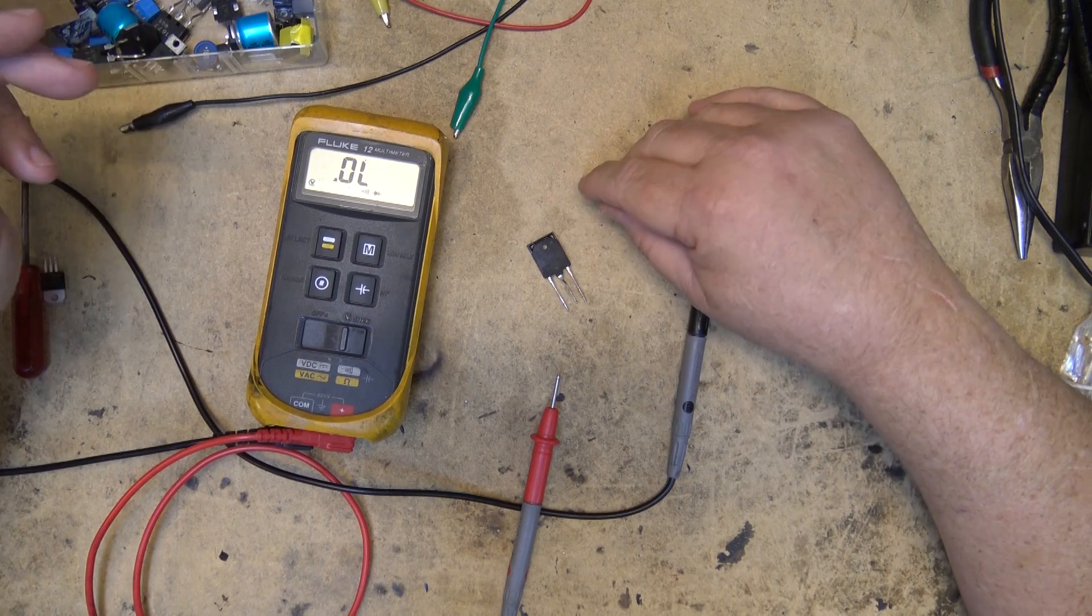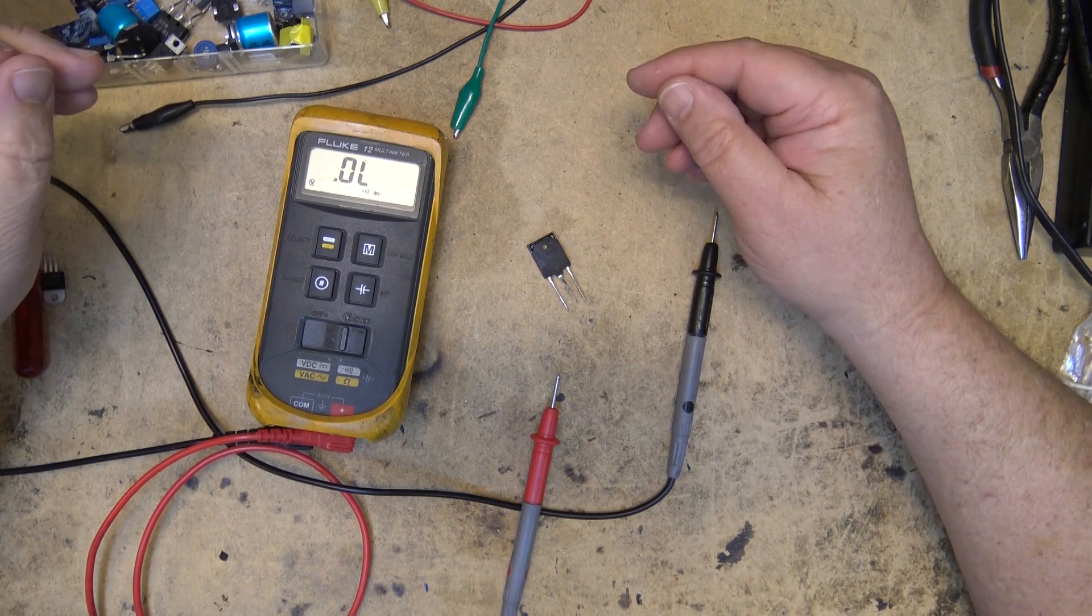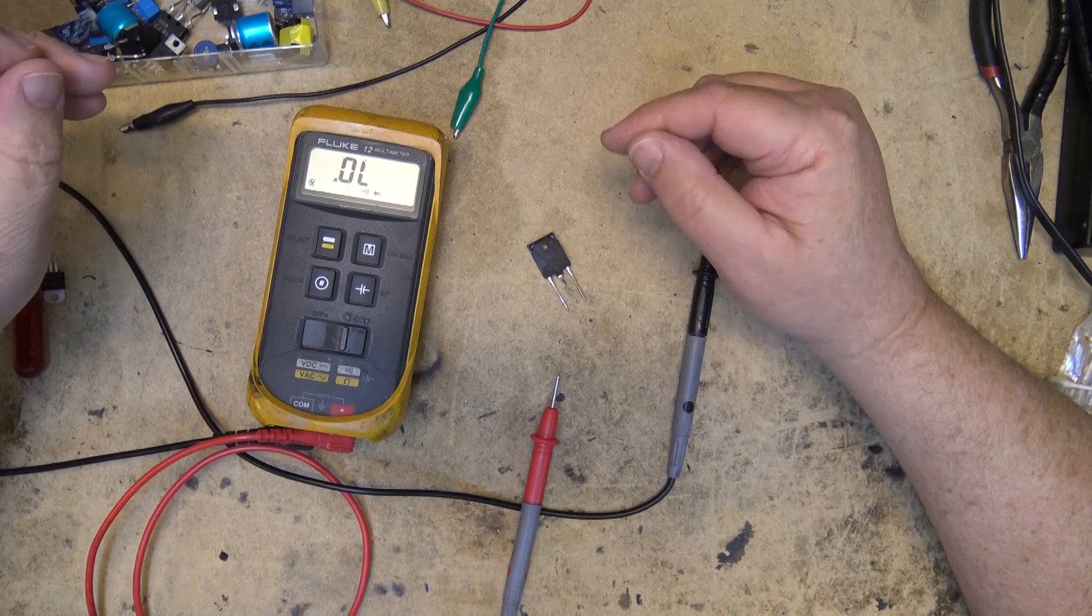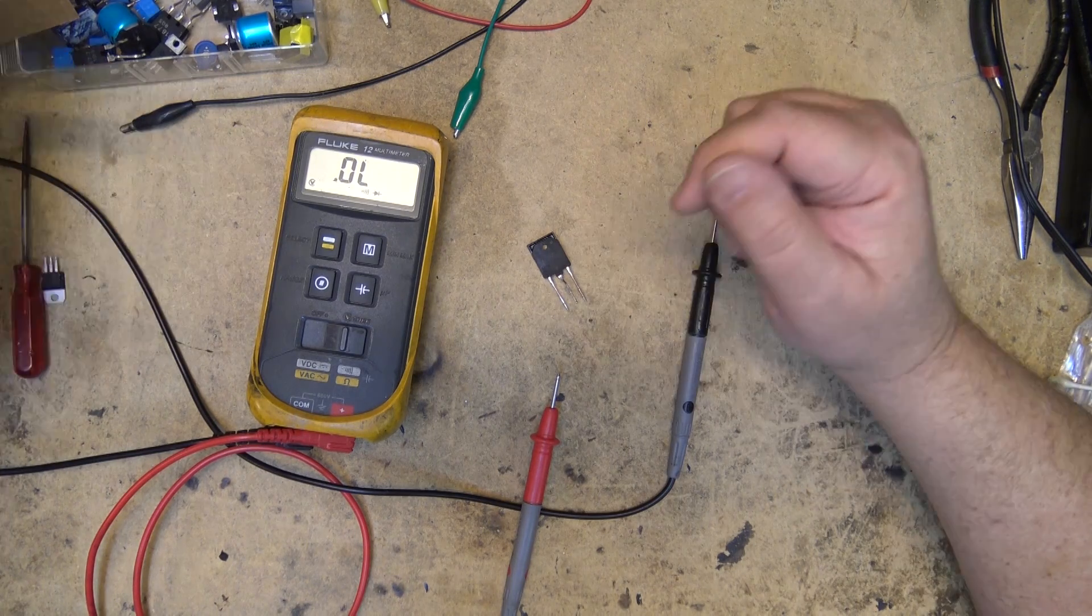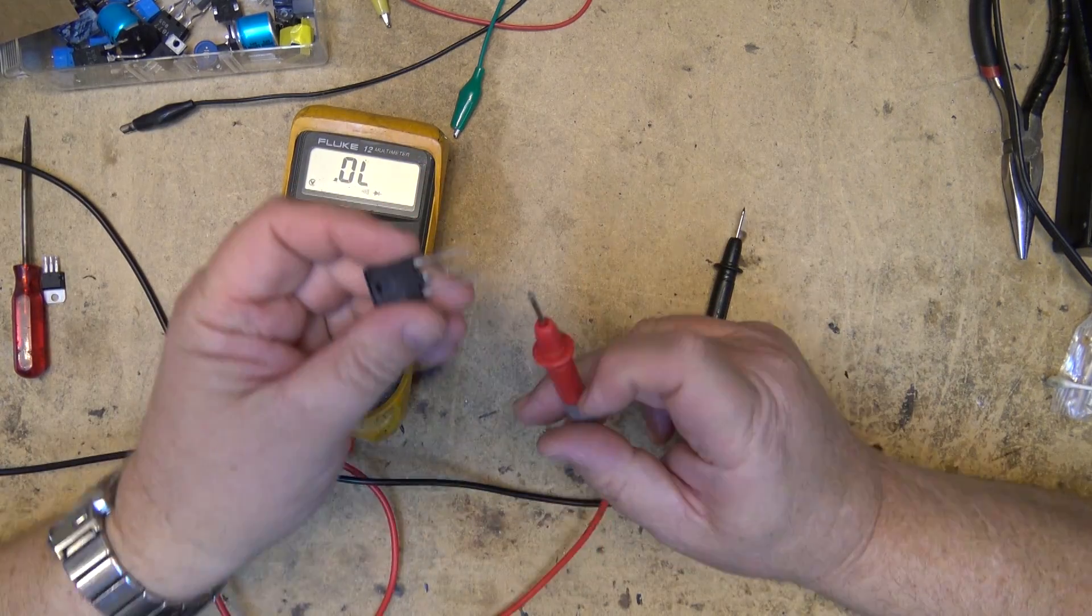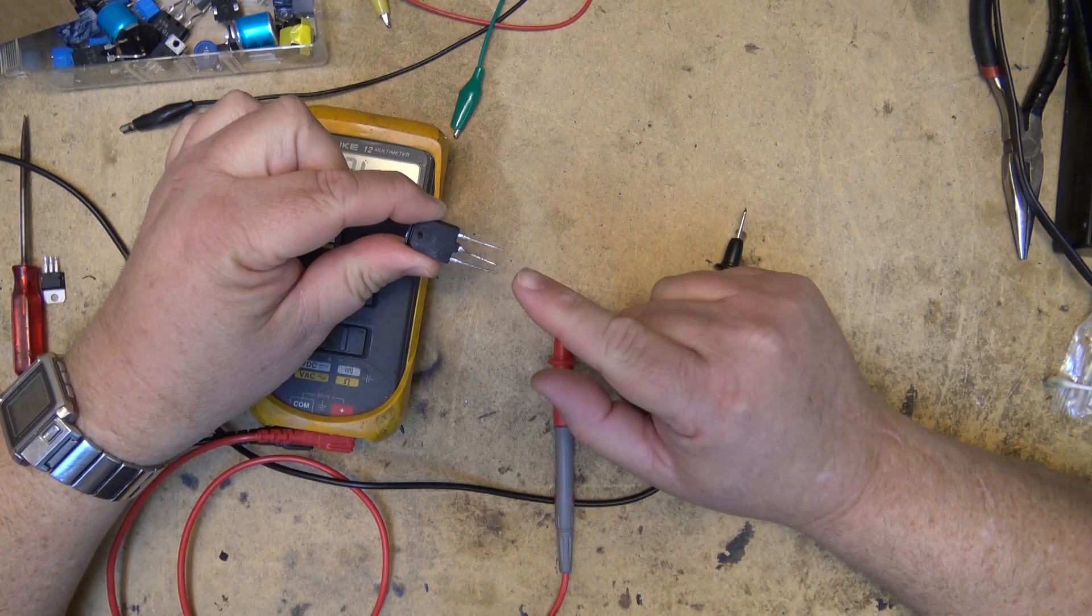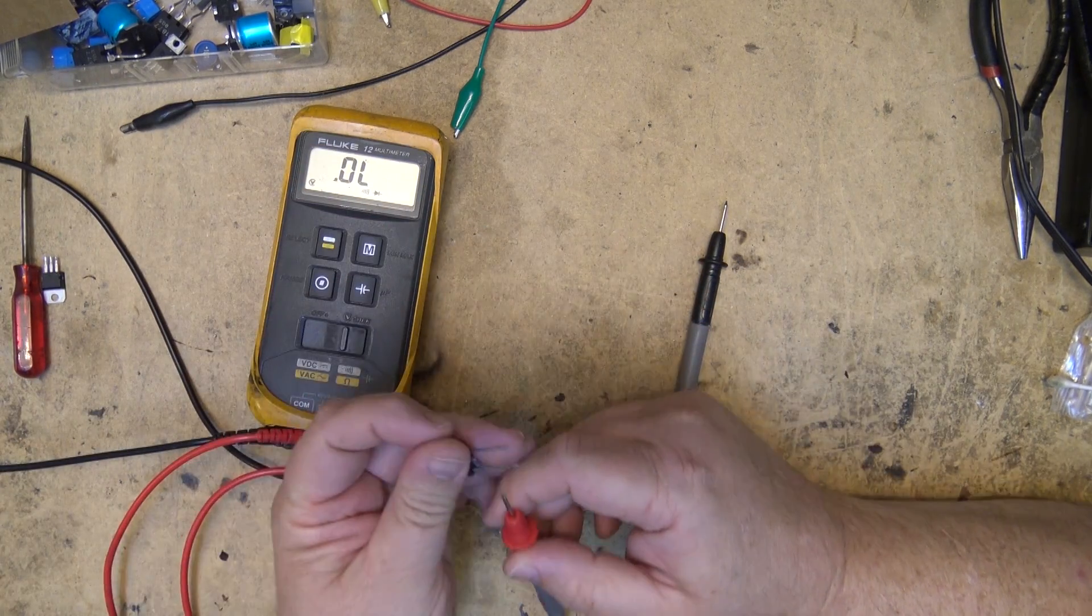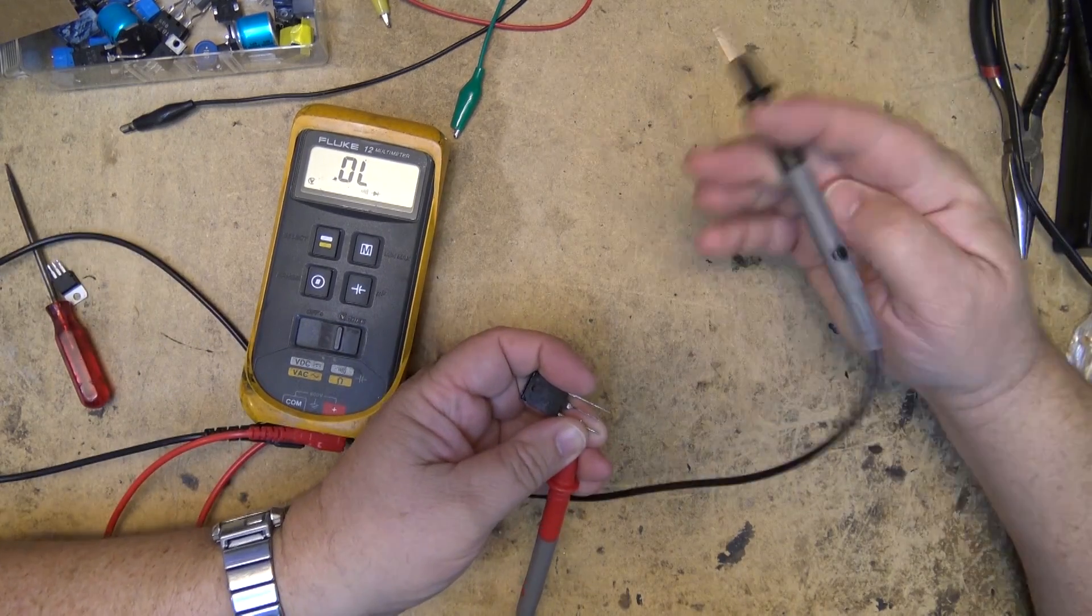If it's an NPN, your diode junction will be negative on the collector to positive on the base and negative on the emitter to positive on the base. So this being an NPN transistor, the base is on this transistor is base, collector, emitter. So I put my positive terminal on the base.